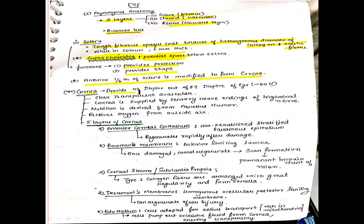The cornea provides 43 diopters out of 59 diopters of refractive power of the eye. It is clear, transparent, and an avascular structure — there is no blood supply. Its nourishment comes from the aqueous humor: glucose is anaerobically converted into lactic acid, which then goes back into the aqueous humor. The cornea is supplied by sensory nerve endings of the trigeminal nerve, and some oxygen is received from the outside environment.